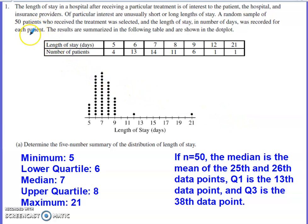The data that we have access to in this particular problem is presented in frequency table form as well as dot plot form. The data involves the length of stay in a hospital after a particular treatment. It's something that's of interest to the patient, the hospital, and insurance providers. Of particular interest are the unusually short or long lengths of stay. We've got a random sample of 50 patients who received the treatment, and the length of stay in number of days was recorded for each patient.